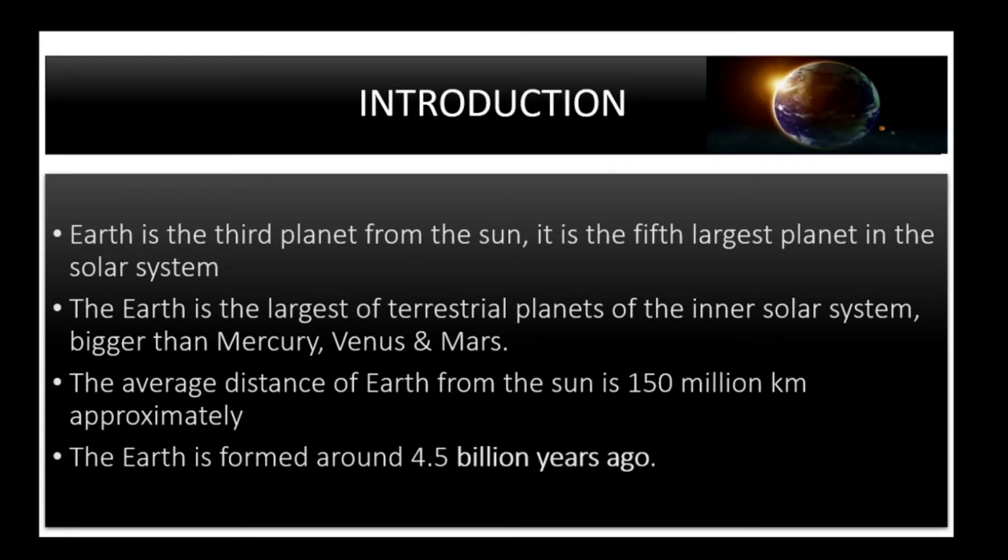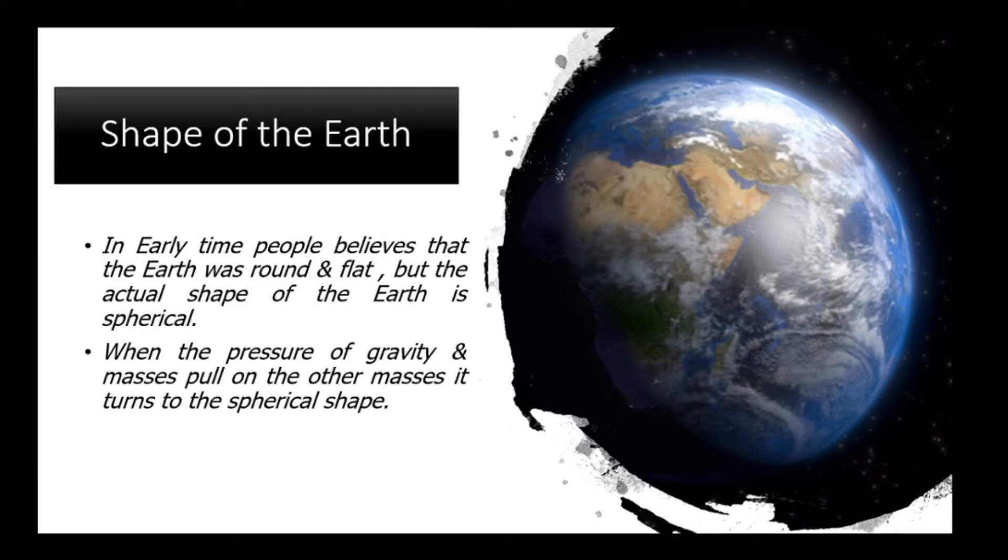The average distance of the Earth from the Sun is about 150 million kilometers. The Earth was formed around 4.5 million years ago. Now let's discuss the shape of the Earth.